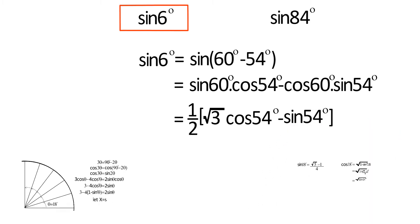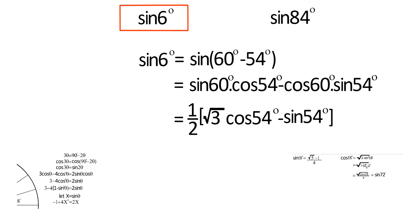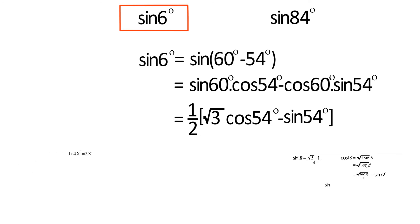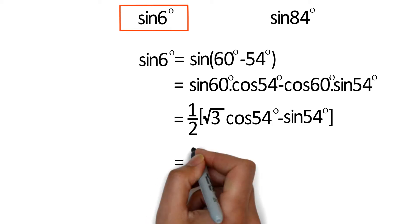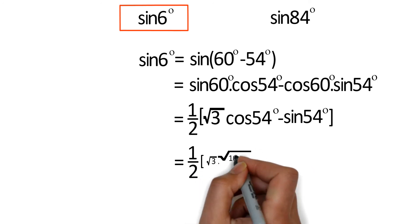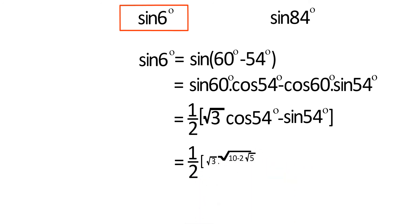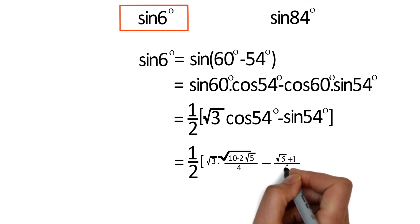We found the value of sin 54° and cos 54° in our previous video — check the description box below if you want to watch that. After putting in those values, we get sin 6° = (1/2)(√3 · √(10 - 2√5)/4) minus (√5 + 1)/4.